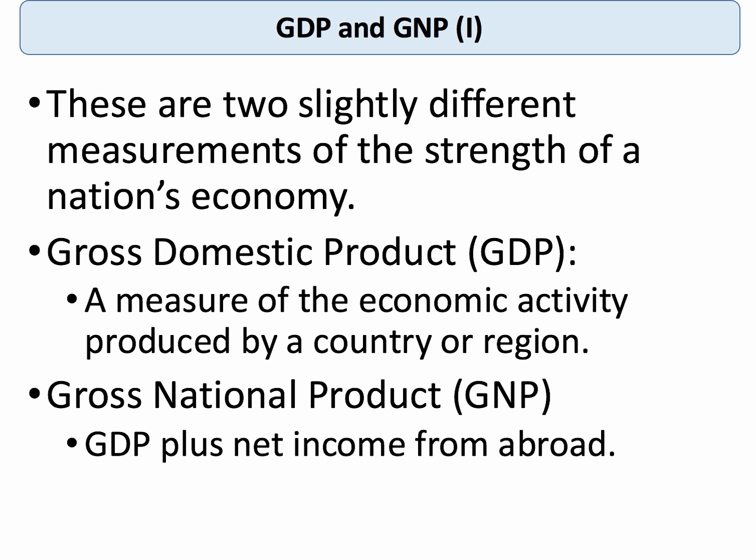So GDP and GNI are two slightly different measures of the strength of an economy. GDP is the measure of the output produced by a country. GNI is the output plus the net income from overseas.